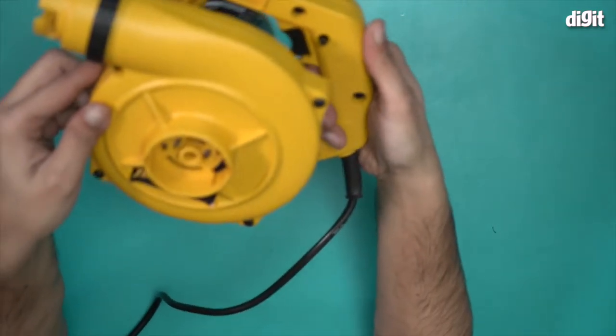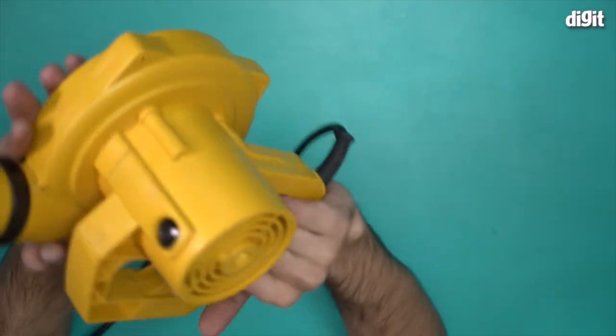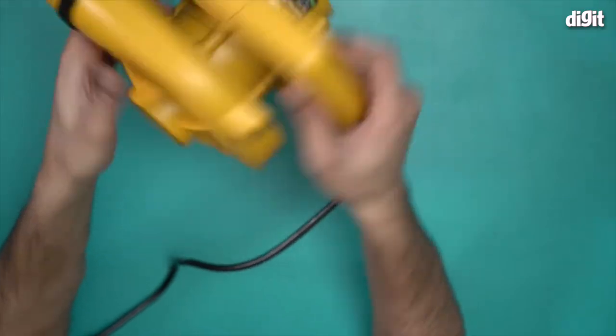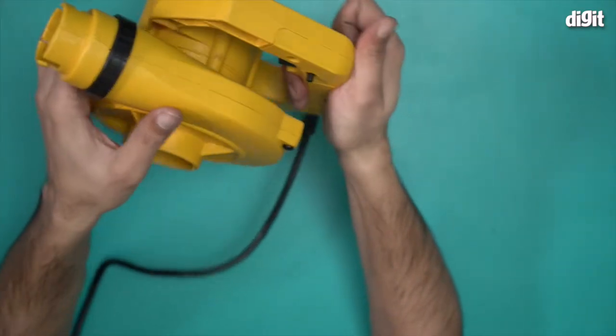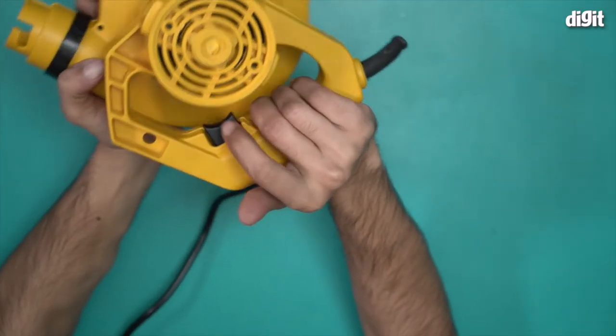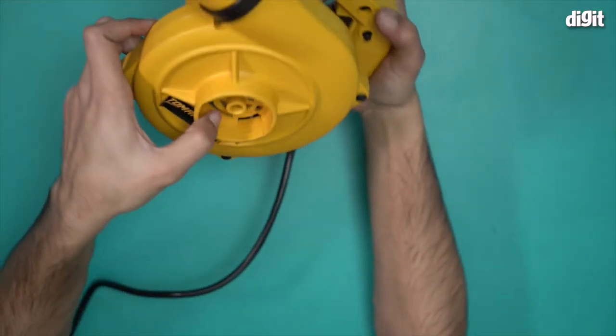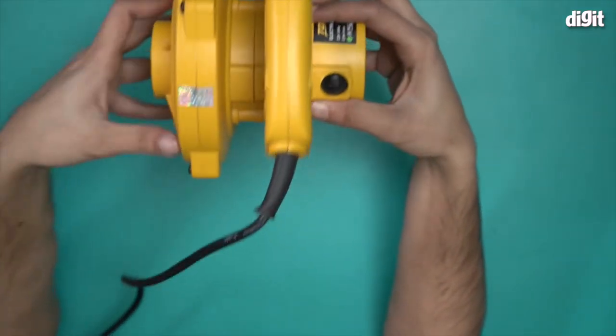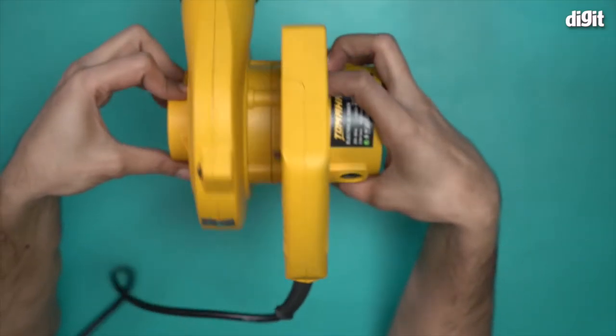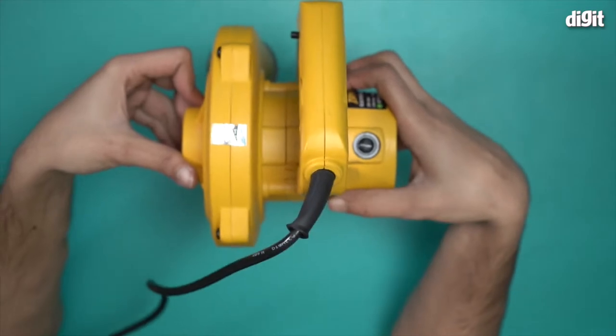This comes with a gun-like handle and this is the trigger. There are two fans—this is one and this is the other. This is the motor unit, which is the heaviest bit. This is the actual blower component.